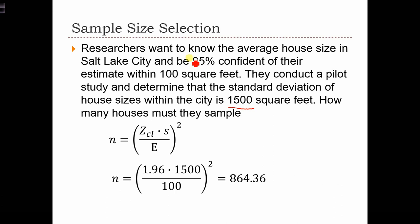All we have to do here is plug in the numbers. The z-score for 95% confidence, we find that from our table to be 1.96. The standard deviation is from our pilot sample. We found that to be 1,500 square feet. And the margin of error is 100 feet. So when we do all the math, we find that n has to equal 864.36.